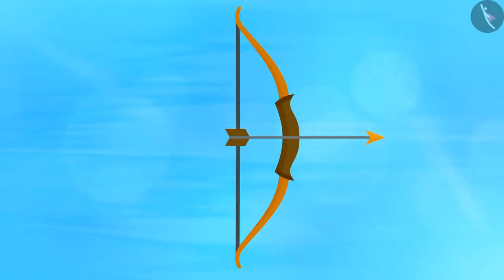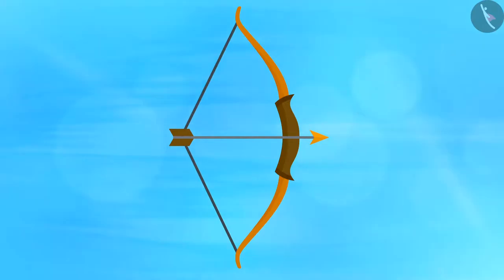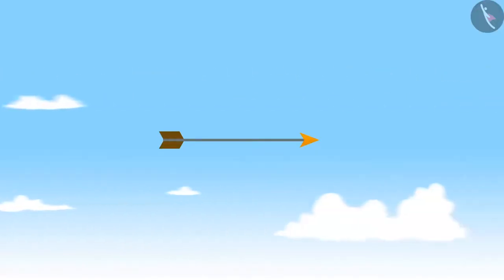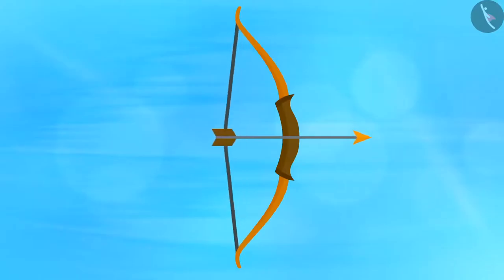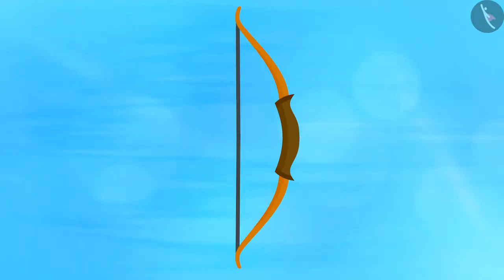Now take a bow and an arrow. Place the arrow on the bow with one end supported by the string, then stretch the string and release the arrow — you will notice that the arrow flies off to a certain distance. The bow stores potential energy when the bow string is stretched, and then this energy changes to the kinetic energy of the flying arrow.